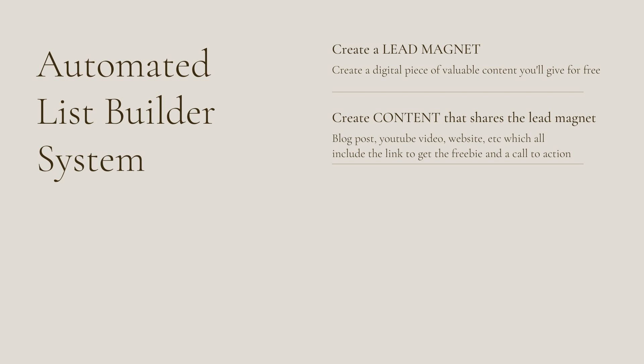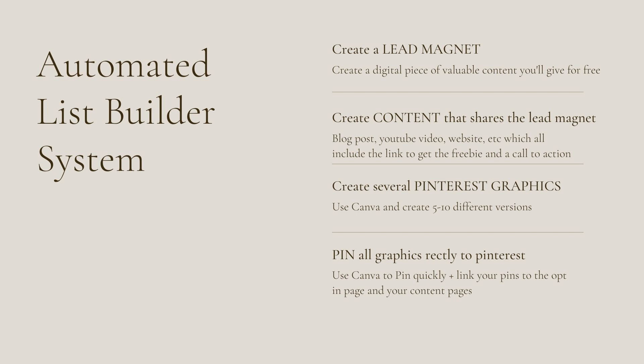You want to have a blog post — something that gives them a little bit more information and more personal connection. Step three, create several Pinterest graphics. Use a free account in Canva and create at least five to ten different versions of your graphic. Next, use Canva to pin all graphics directly onto Pinterest. Link your pins to the opt-in page where they can sign up for the freebie and to your content pages, such as your blog post, your video, or your website.